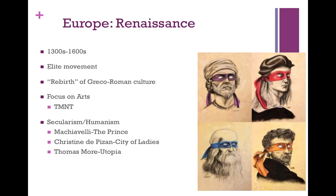During the Middle Ages, Greco-Roman culture kind of died out — it didn't really disappear, but it wasn't a major focus of European culture. The focus was more on the church and on the specific Germanic tribe you would have been part of. However, that changes here. They're reintroduced to Greece and Rome through Muslim scholars who translated those original works and brought them back to Europe through things like the Crusades and the trade routes of the Silk Road.